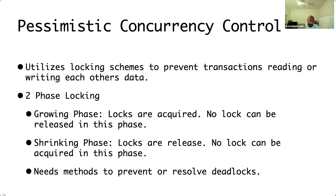On the other hand, we have pessimistic concurrency control. It utilizes locking schemes to prevent transactions from reading or writing each other's data. Two-phase locking is one such method, divided into two phases. The first is the growing phase, where locks are acquired but not released. The growing phase is followed by a shrinking phase where locks are released, and no new locks may be acquired. Pessimistic concurrency control is essentially guarding your data and scheduling lock acquisition and release, and therefore needs methods to prevent or resolve deadlocks, as transactions can acquire locks in a non-ordered fashion.